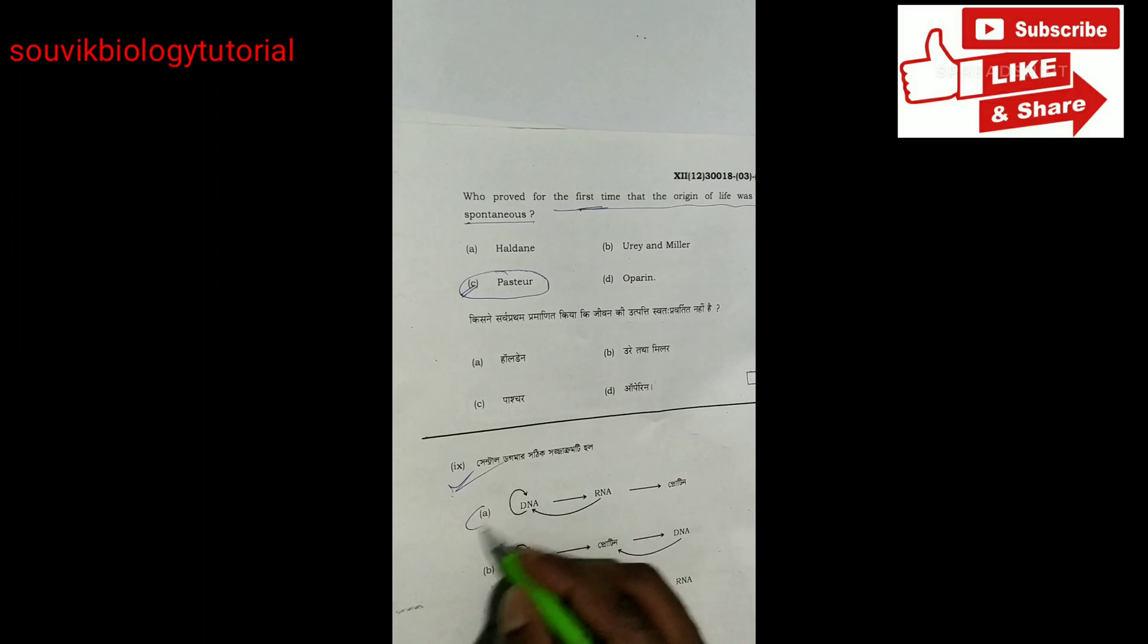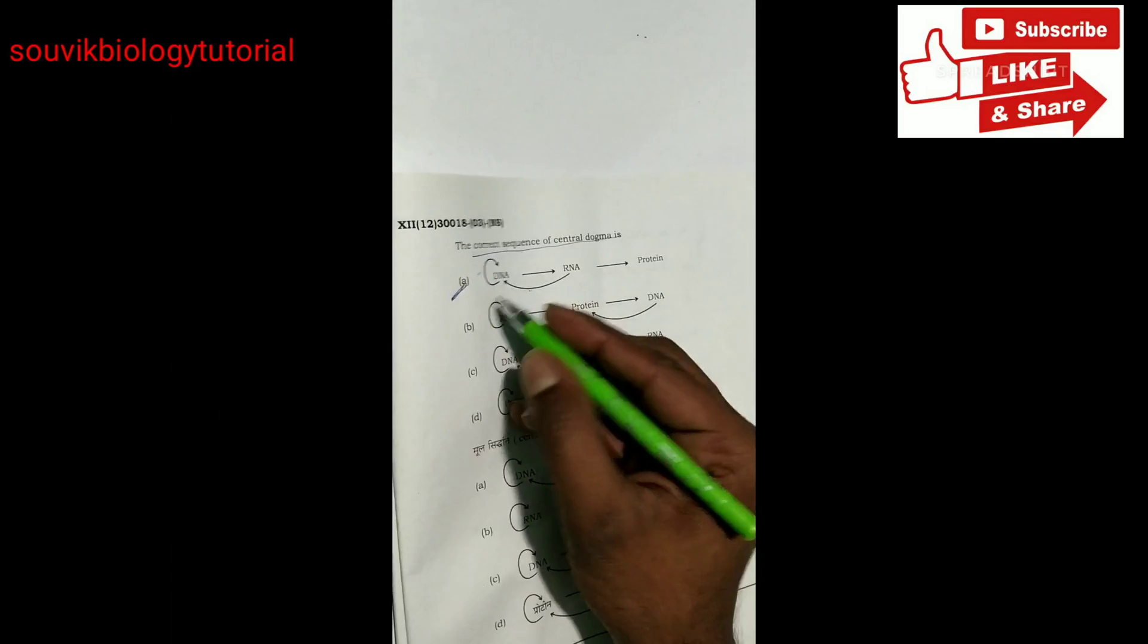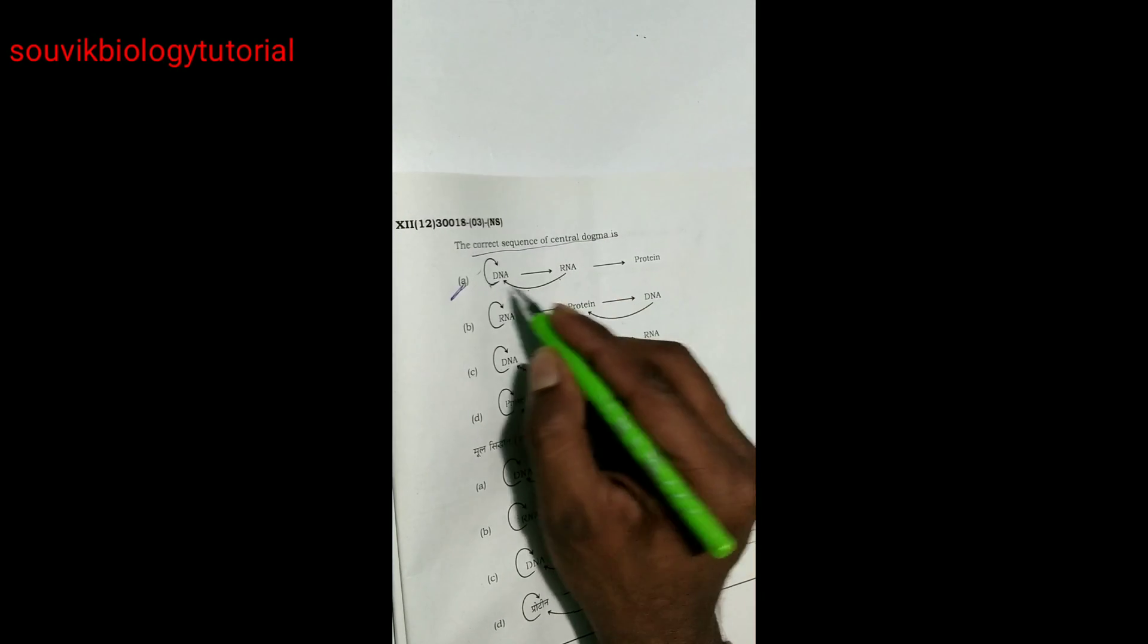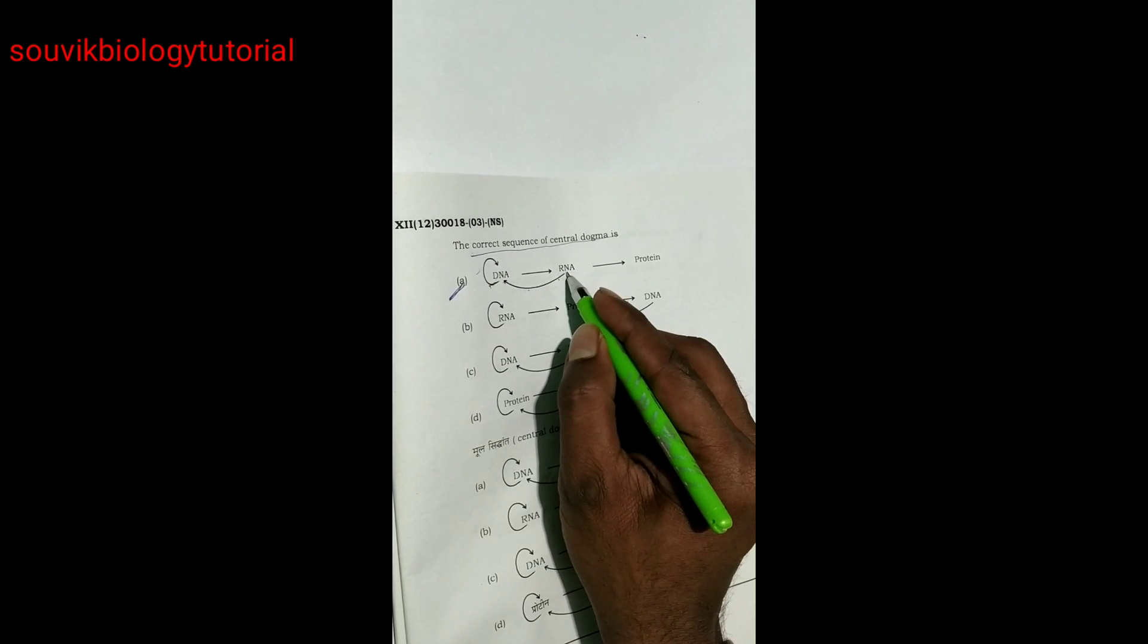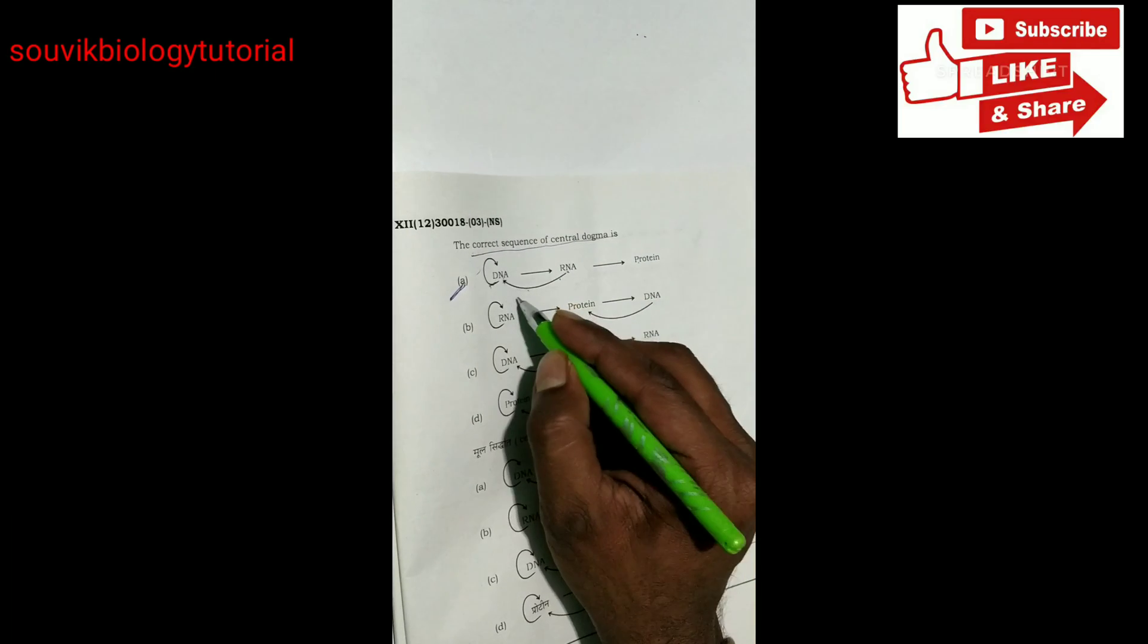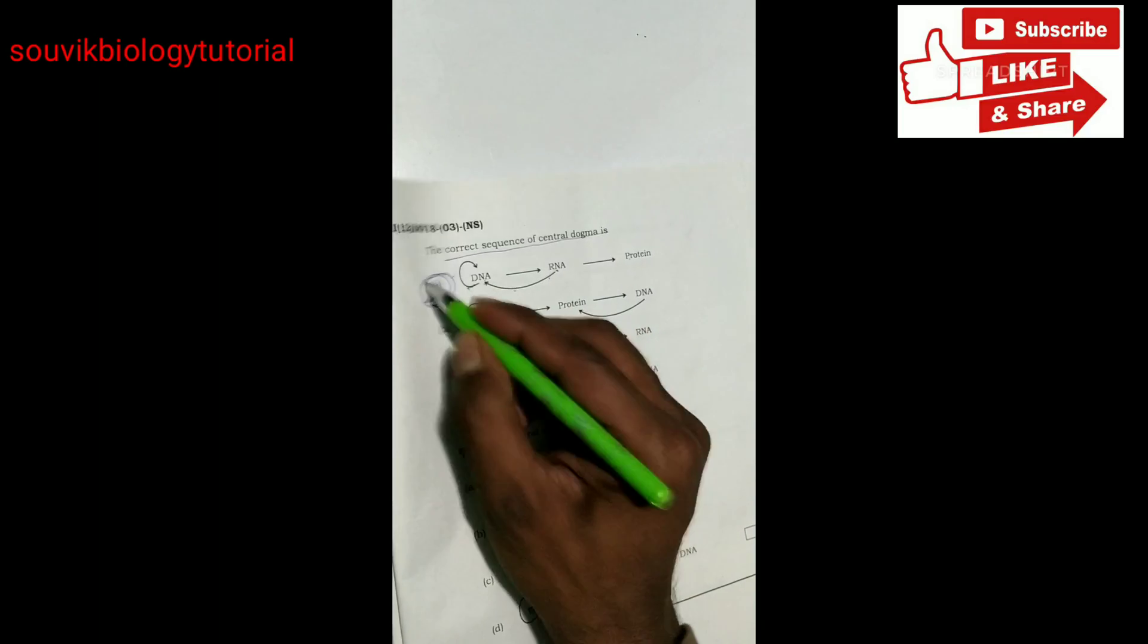Next, central dogma. The right answer is A. DNA to RNA. DNA to DNA replication. DNA to RNA transcription. RNA to protein translation. And RNA to DNA reverse transcription. So right answer is A.